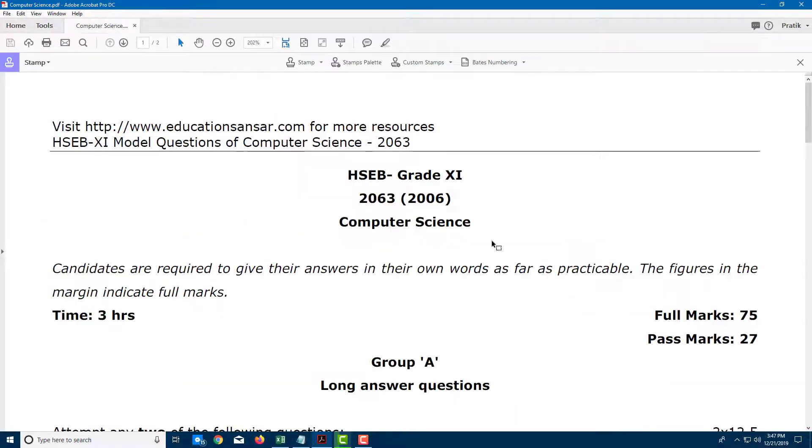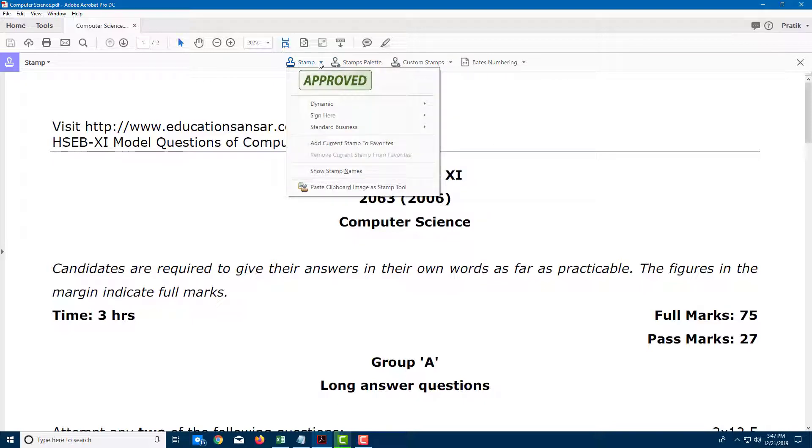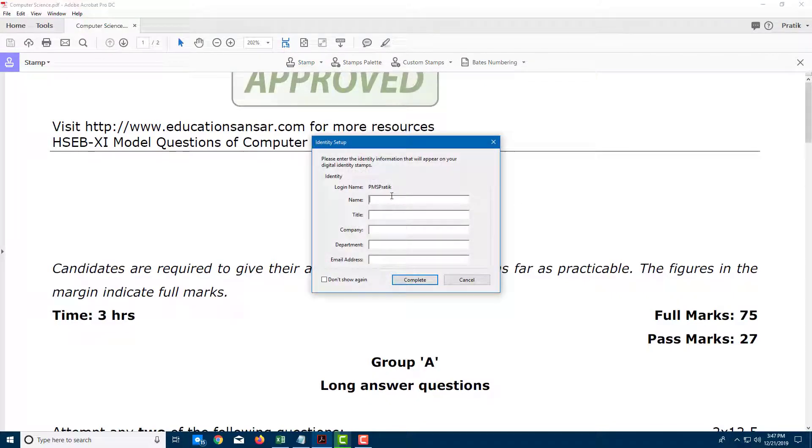Click on Stamp and you'll see these stamp tools. Once you go into the stamp, you can see that Approved is the regular stamp. You can choose this and also add in your name—this is the login name that I have.